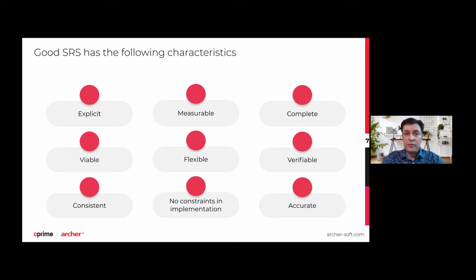Then, measurable: the requirements in your SRS document need to be measurable so the finished product can be validated and verified against the specifications. Complete: an SRS document should have enough information for your development team to finish the product and for testers to validate that the product meets user needs without bugs. Available: the requirements should fit the reality of the current environment, including the budget, timeline, and technology — they shouldn't depend on upcoming technological breakthroughs. Flexible: because things can change in the working environment, your SRS document should be flexible enough to allow updates. Don't add redundant information to multiple sections that all have to be updated with each change.